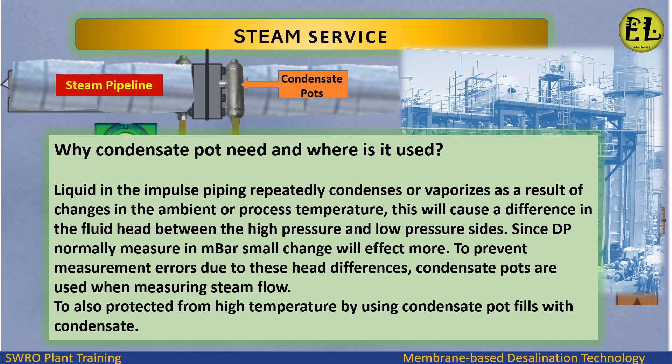Why is a condensate pot needed and where is it used? Liquid in the impulse piping repeatedly condenses or vaporizes as a result of changes in the ambient or process temperature. This causes a difference in the fluid head between the high pressure and low pressure sides. Since DP is normally measured in millibar, small changes will affect the reading more. To prevent measurement errors due to these head differences, condensate pots are used when measuring steam flow.